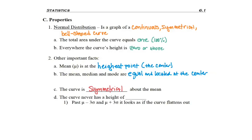Meaning the left side and the right side are mirror images of each other based about the middle. And the last thing is that the curve will never have a height of zero.